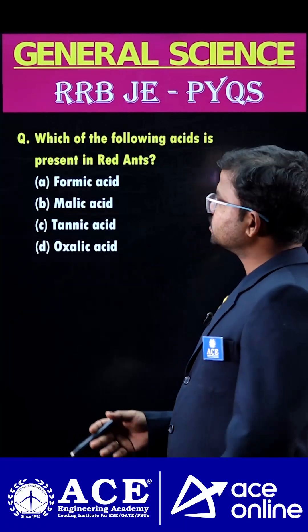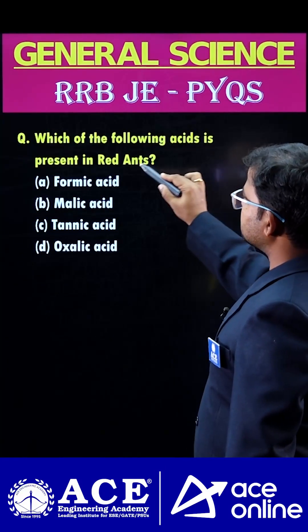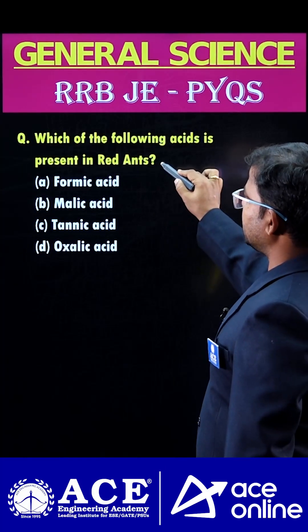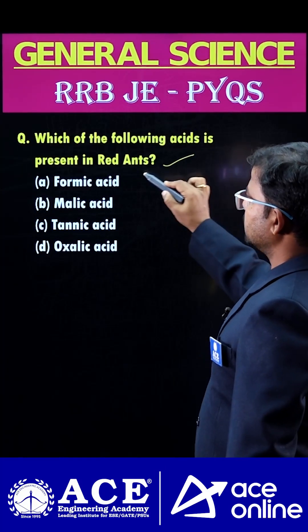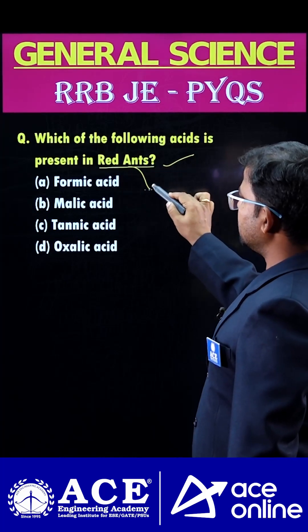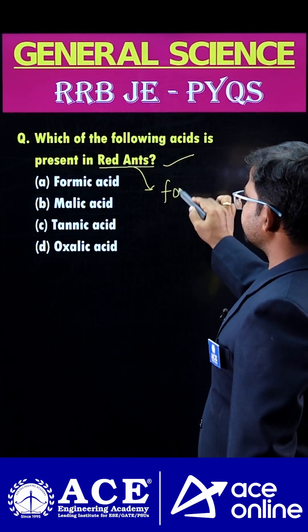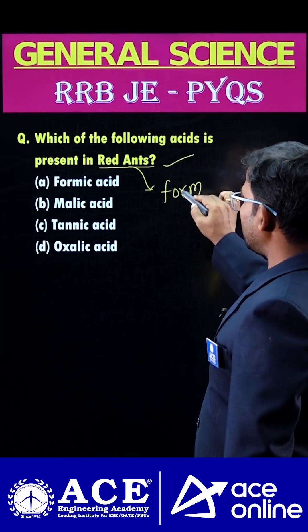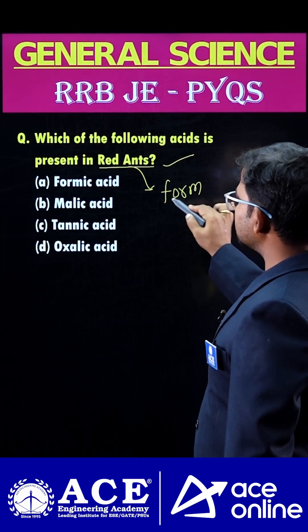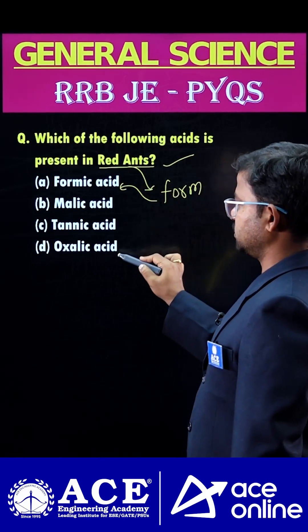Hi students, welcome to ACE online. Which of the following acid is present in red ants? In Latin, 'ant' means nothing but 'form'. So the form-secreted acid is generally pronounced as formic acid.